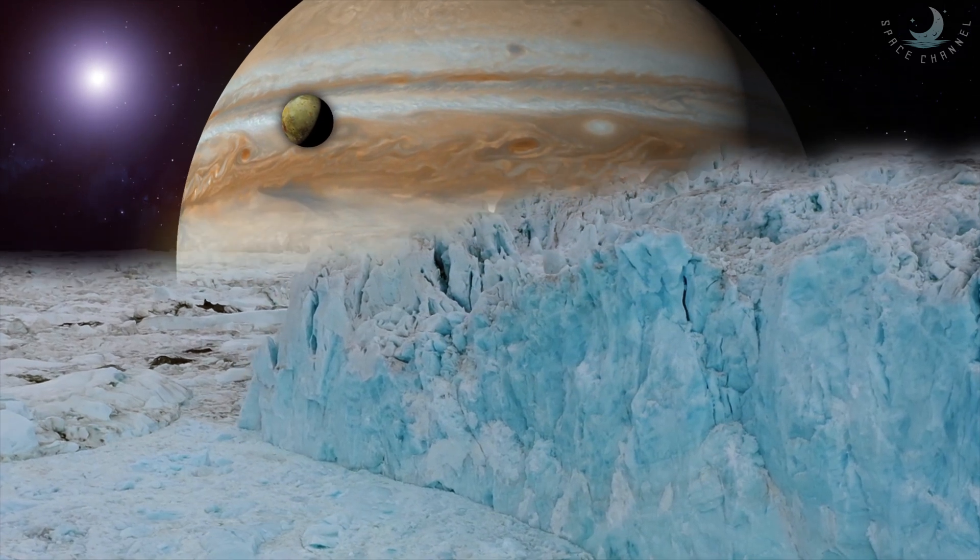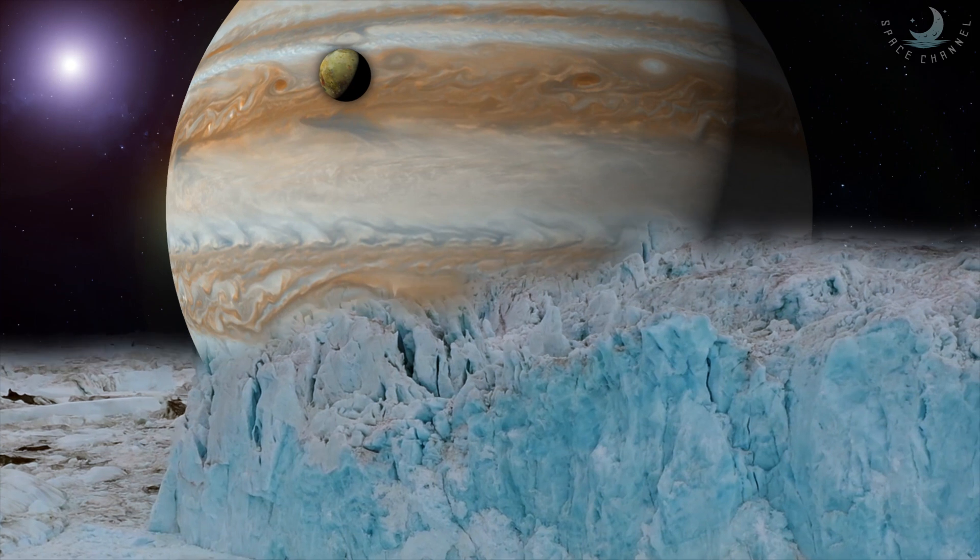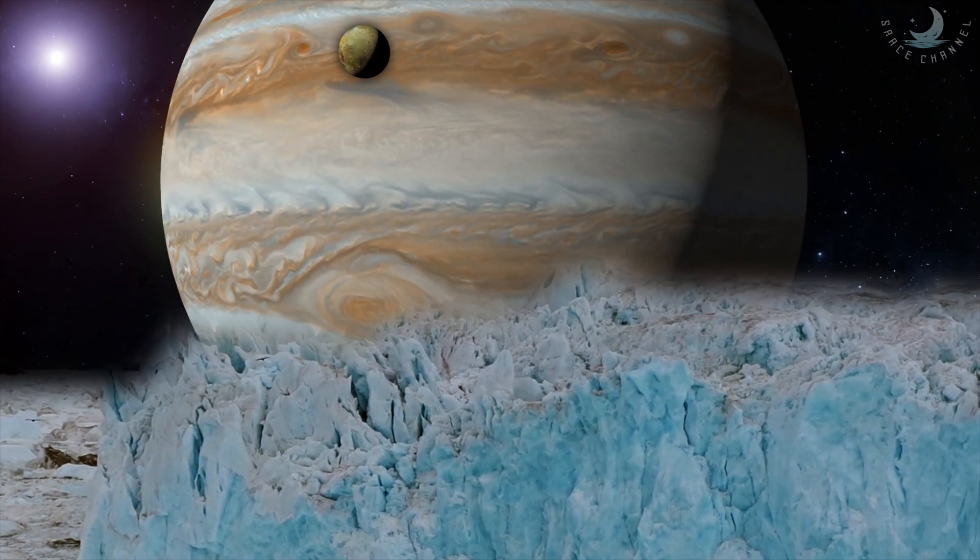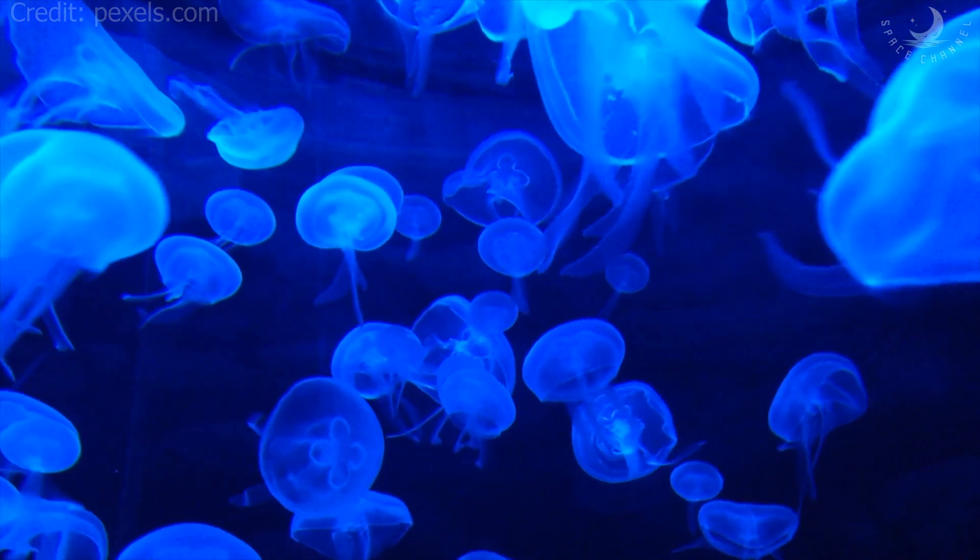Decades ago, science fiction offered a hypothetical scenario. What if alien life were thriving in an ocean beneath the icy surface of Jupiter's moon, Europa?